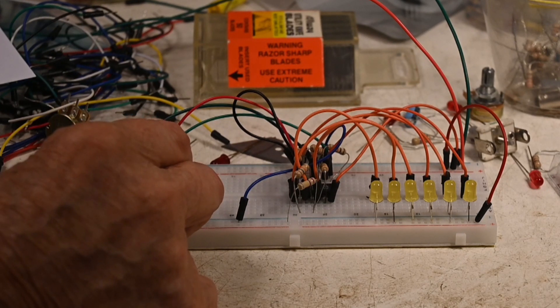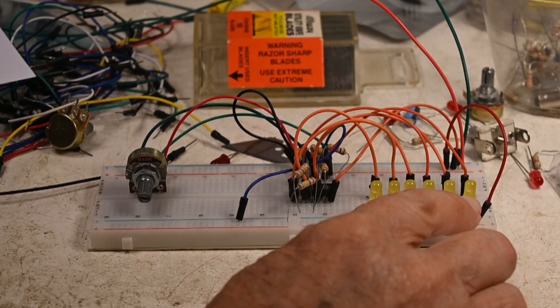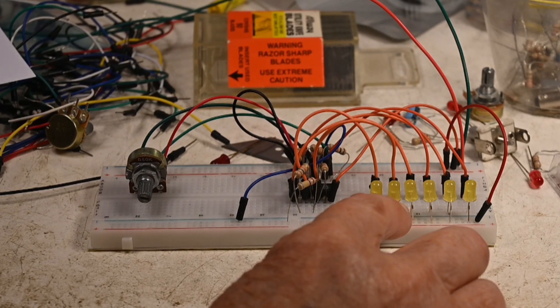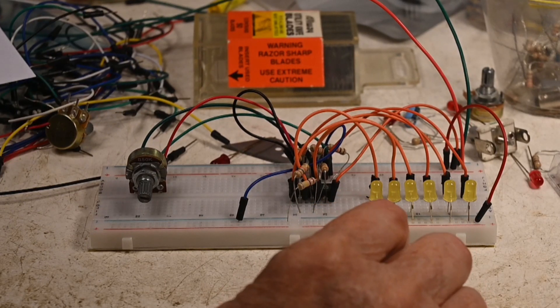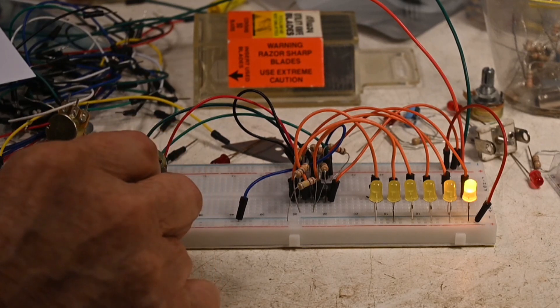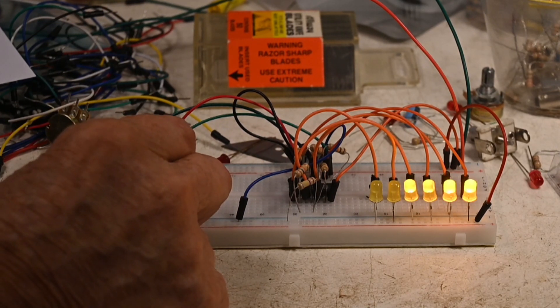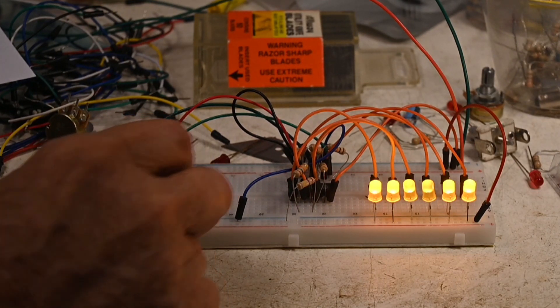So I'm going to turn this up until the first one comes on, first LED, which is right here. This is 1, 2, 3, 4, and you'd think this would be 5, but it's 6 and 5, which is kind of weird. We'll take a look at the diagram a little later. There's the first LED, 2, 3, 4, 6, and 5.